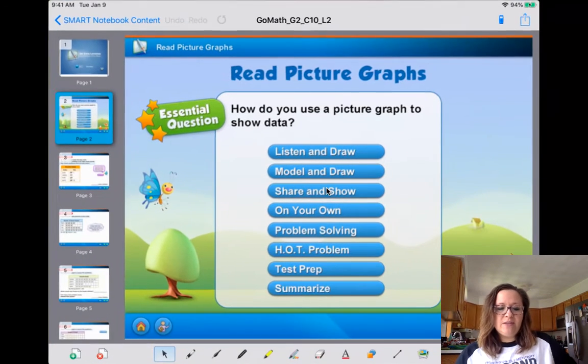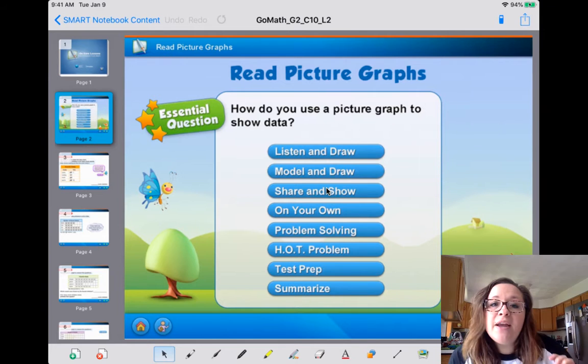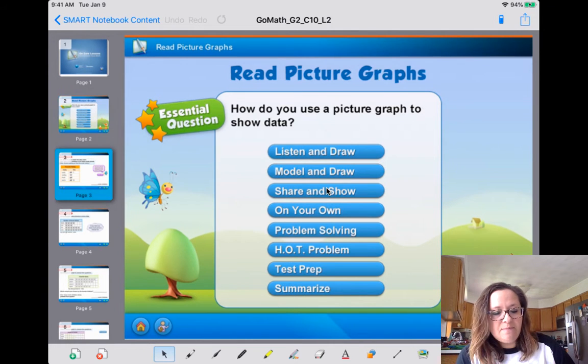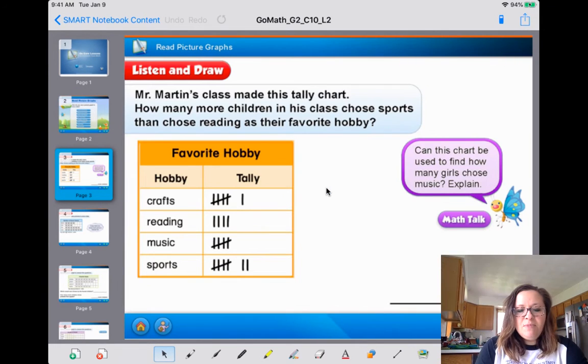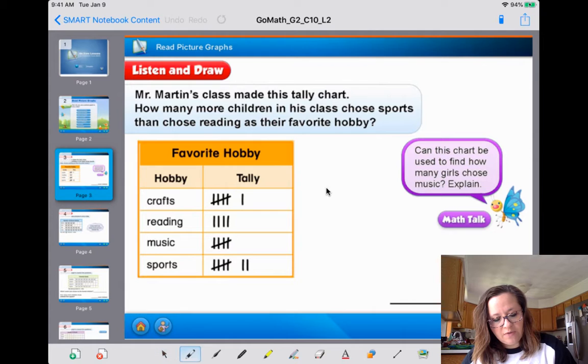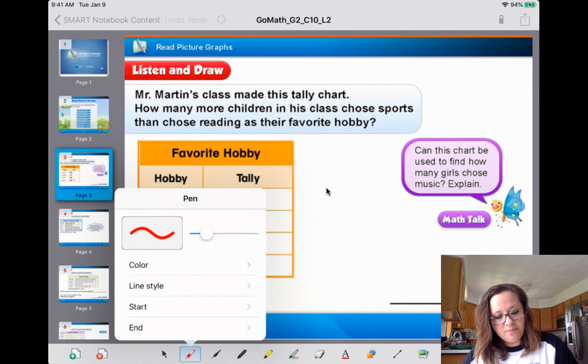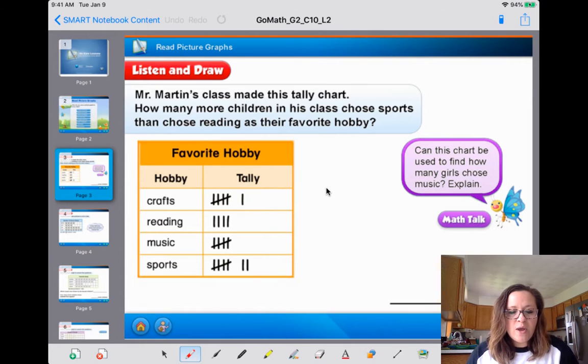So this one's nice because they used a sports ball. And each of those, if you look on the bottom, it got cut off is 10 students. Holy moly, right? All right. So now let's get going here. It says, how do you use a picture graph to show data? All right. Well, let's see what they got going for us today. Mr. Martin's class made this tally chart. How many more children in his class chose sports than chose reading as their favorite hobby?